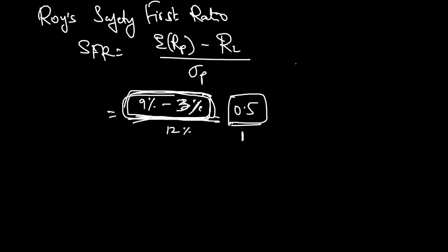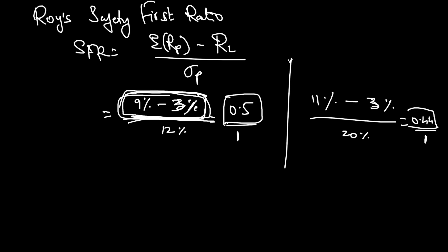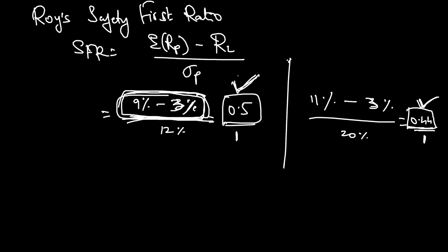Rather than using this standalone, I should compare it with another portfolio and select the best one. For example, a second portfolio has an expected return of 11%, the same threshold level of 3%, and a standard deviation of 20%. The output will be 0.44. So for each unit of risk I'm getting extra premium return of only 0.44%, whereas Portfolio A gives 0.5%. I will go with Portfolio A — higher the SFR number, the better. This is the usage of Roy's Safety First Ratio.